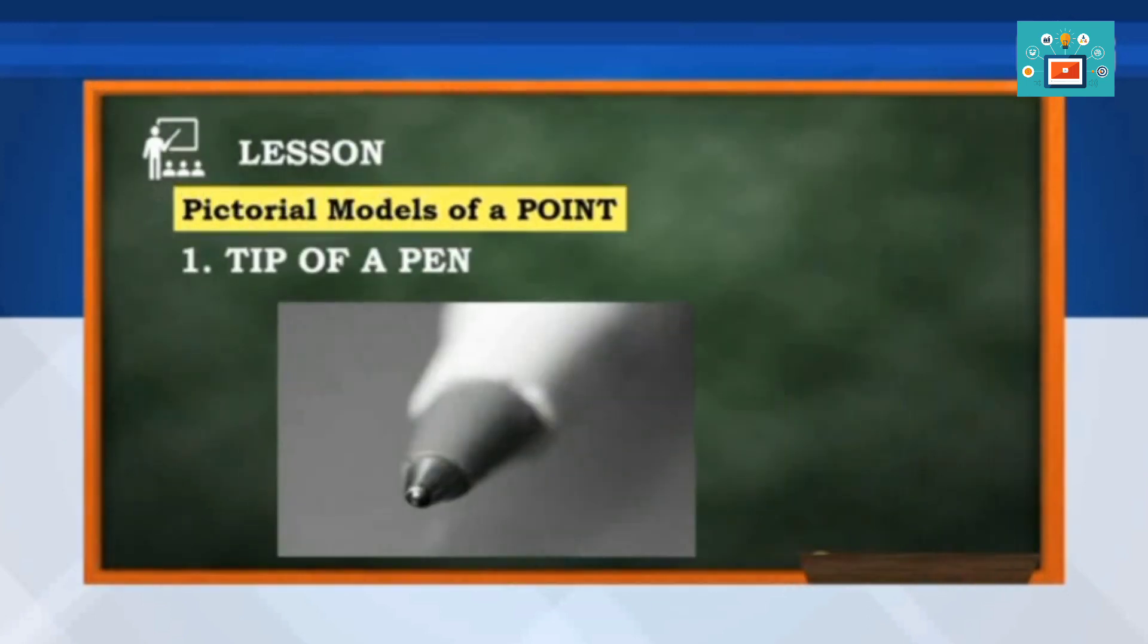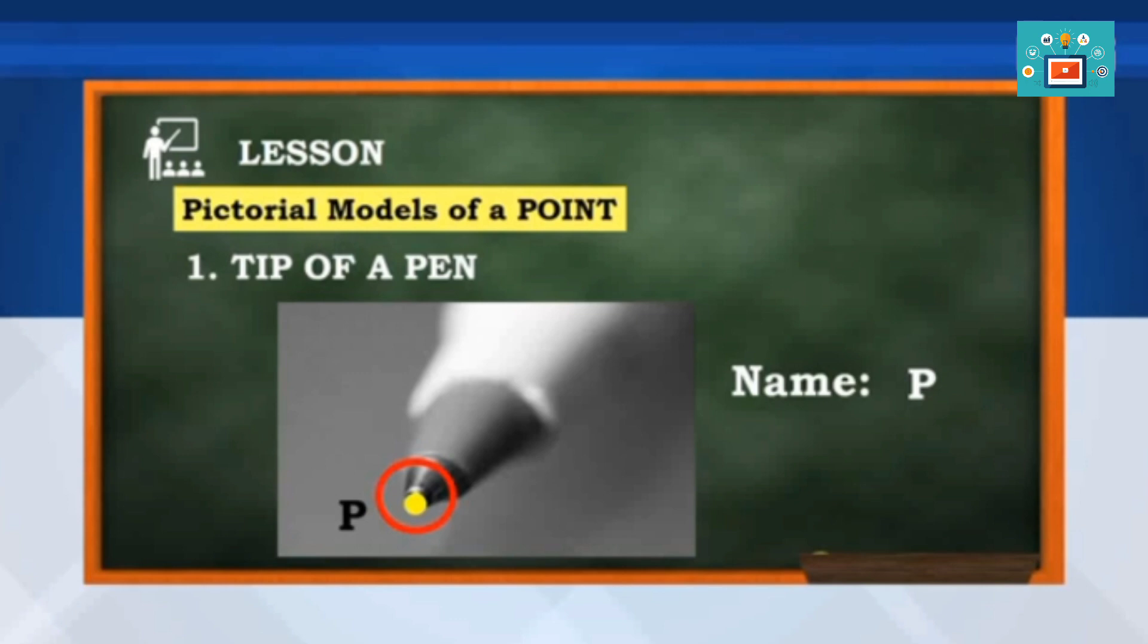These are some pictorial models of a point. First, tip of a pen. This is a point and we name it as P or point T.